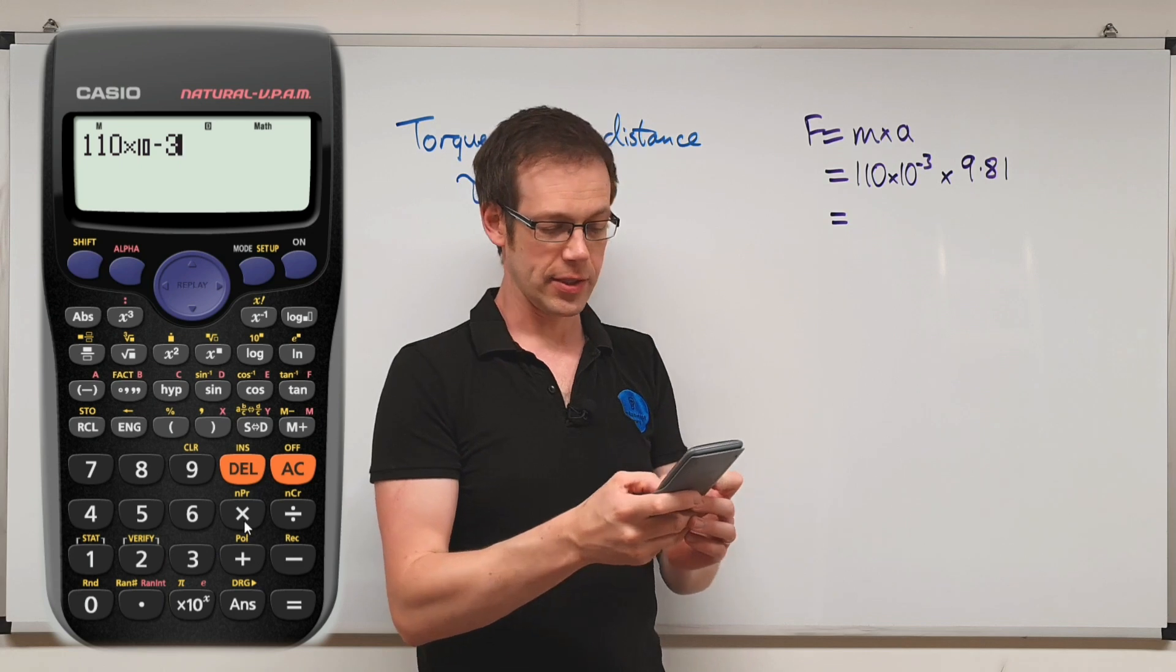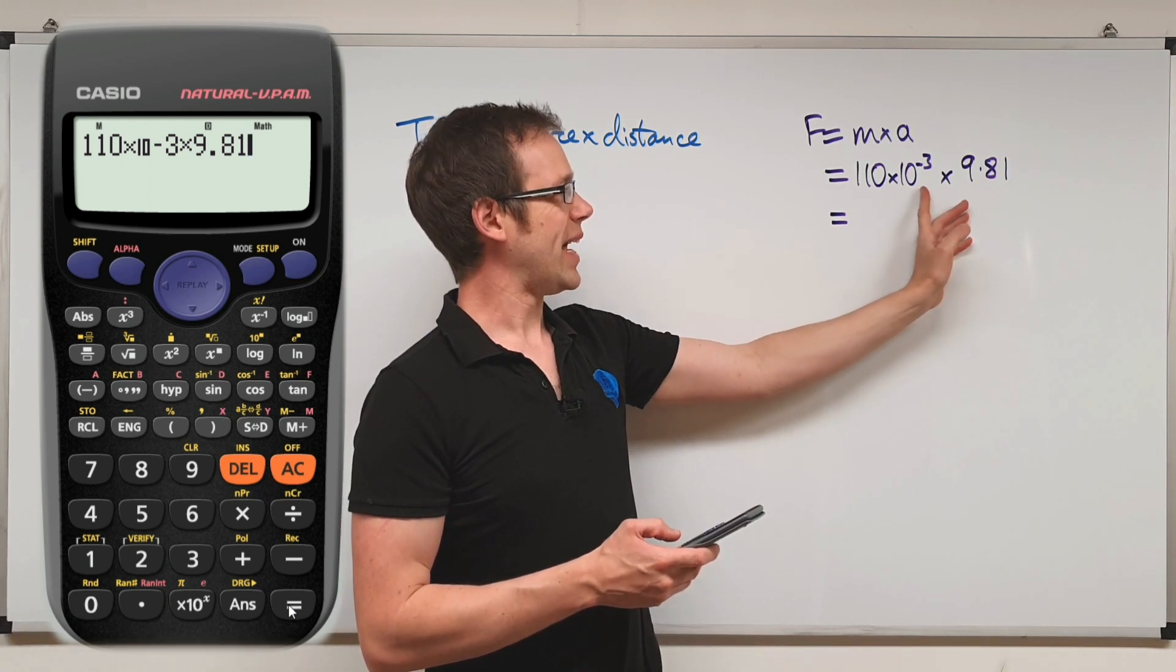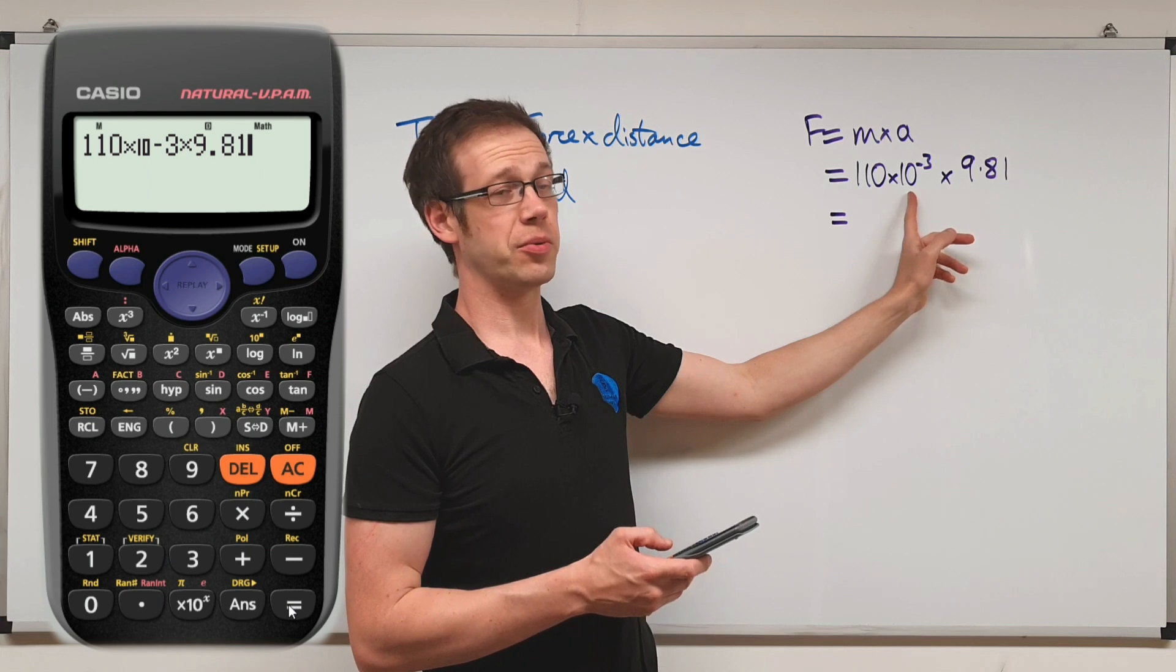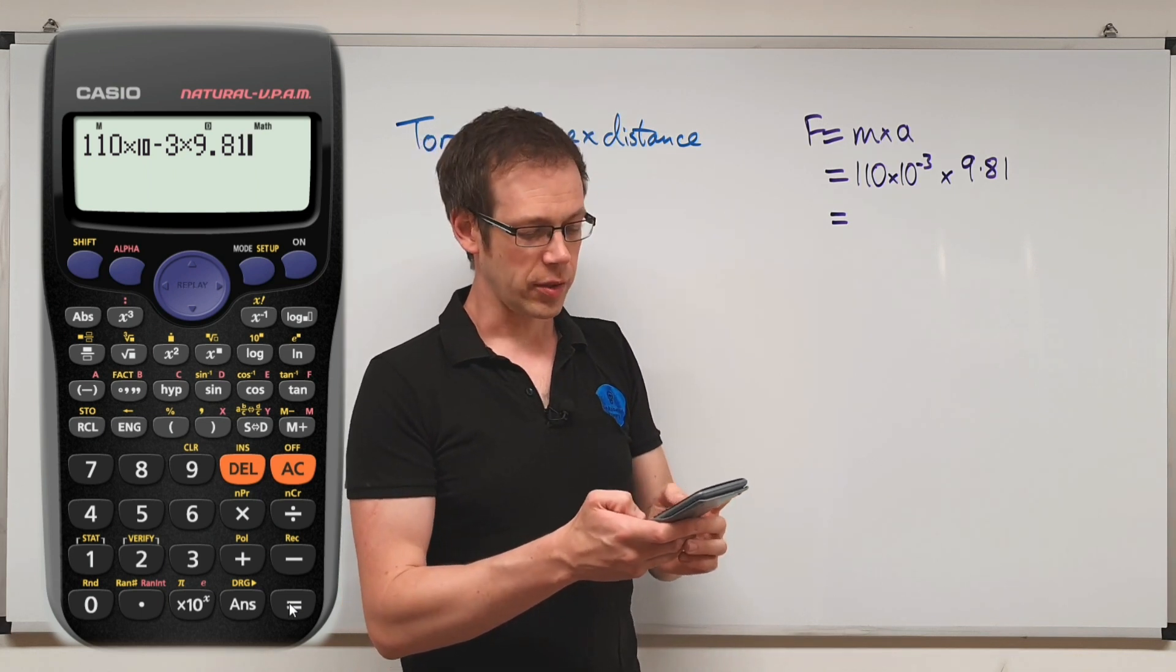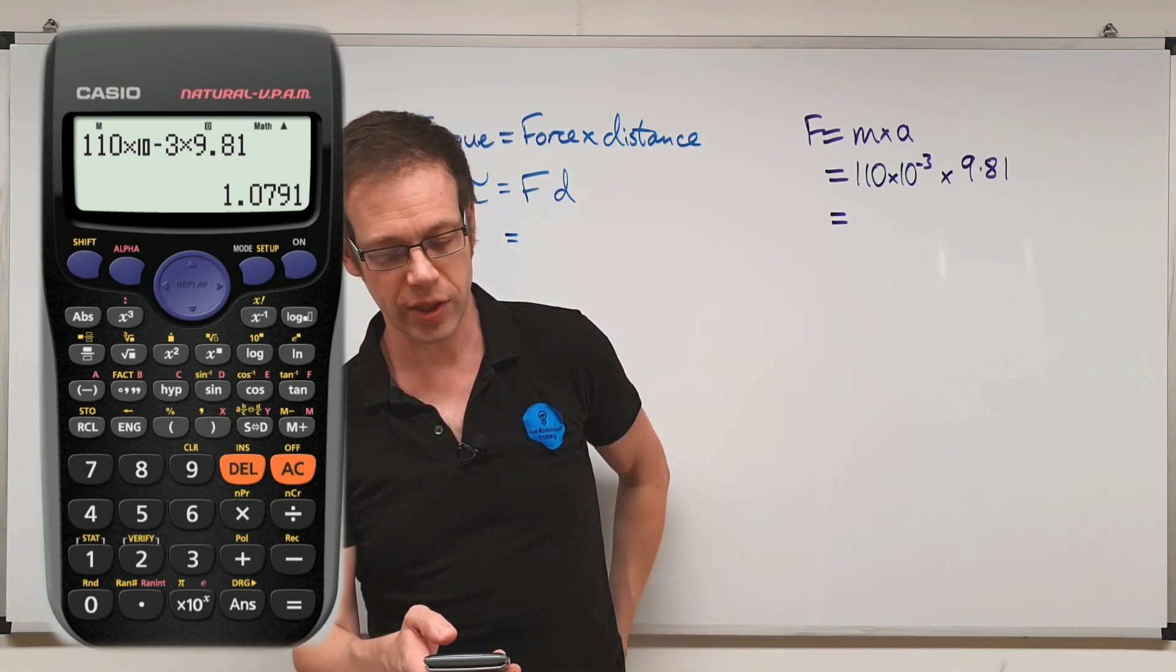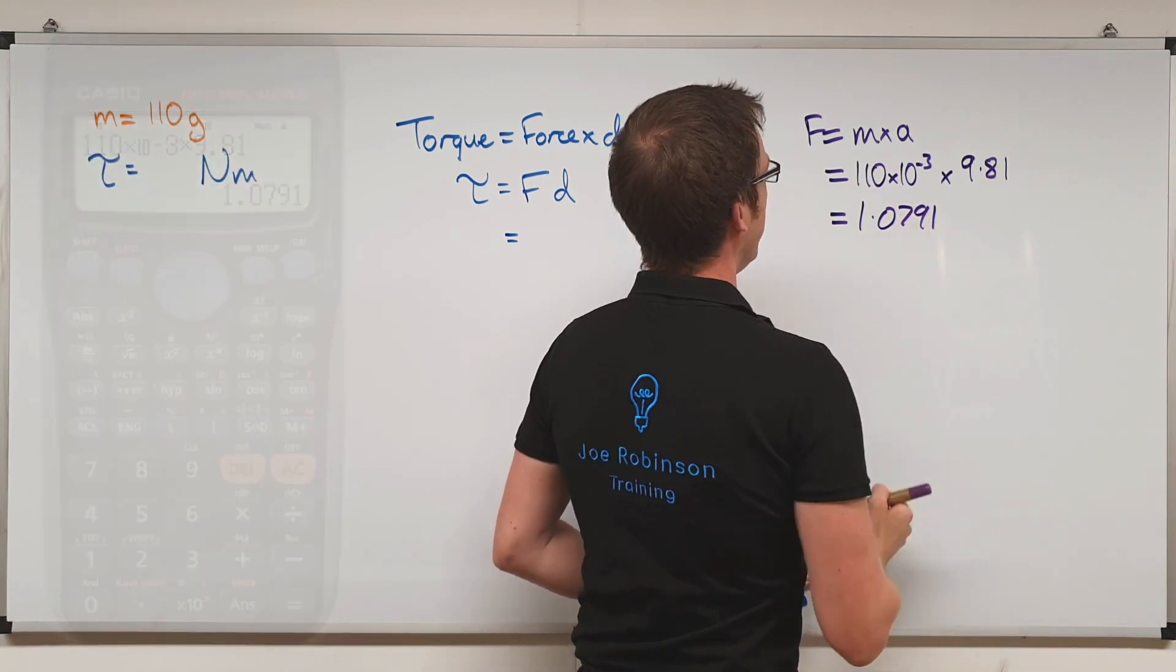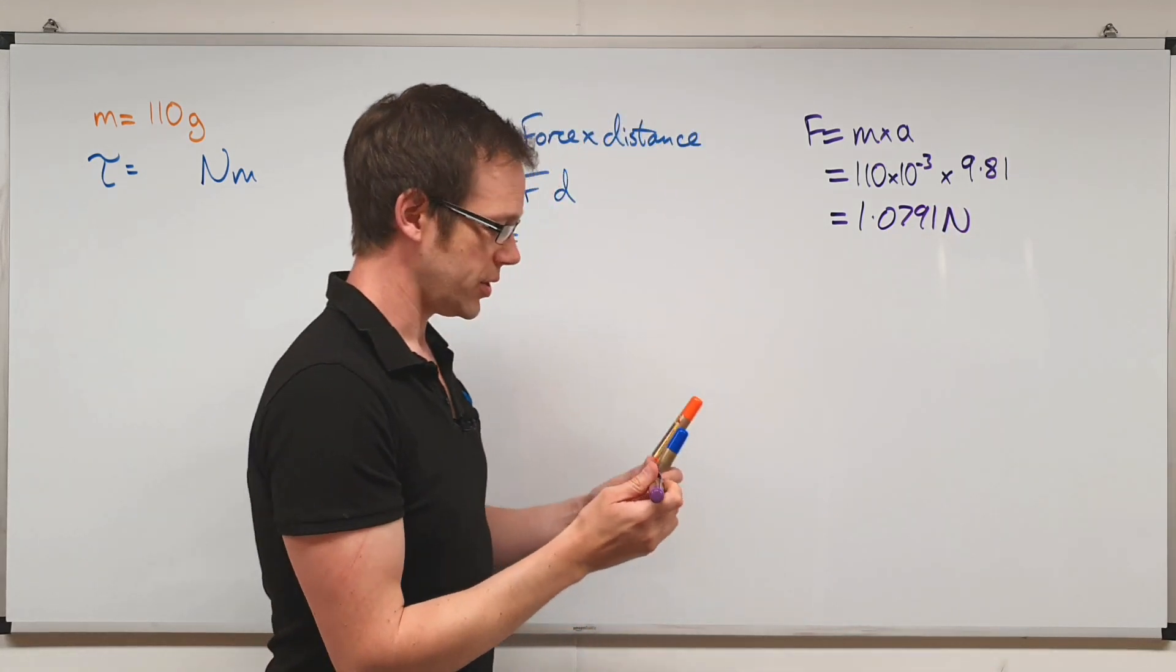And then we're going to times that by 9.81. If this is a little bit confusing to you and you've not seen this before, I will do a video on this. But just bear in mind that actually this is a really helpful mathematical tool, especially if you're going on to study at higher levels. And also even at level two and level three electrical science, you might just get asked a question that is purely about that. So look out for a video on that in the near future. So we'll do that calculation and it comes out at 1.0791. So we've got a force reading of 1.0791. And bear in mind that that is a measurement of force, so that is measured in newtons. So we've got 1.0791 newtons.